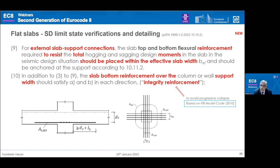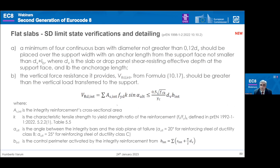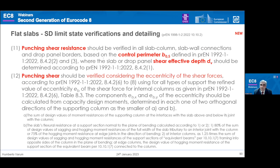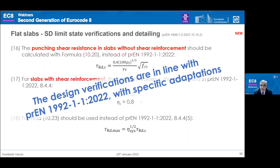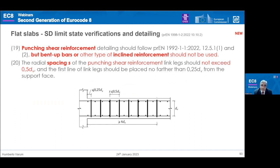An important concern to avoid progressive collapse is quantification of integrity reinforcement, based on the Model Code, with specific expressions and detailing rules for the designer. For punching shear resistance, the concepts from Eurocode 2 are kept in terms of control perimeter and effective shear depth, with the strategy of Eurocode 2 adapted for seismic design. Simple rules for minimum spacing of punching shear reinforcement are also advanced. Rules from Eurocode 2 are adopted, but inclined or bent-up bars are not recommended for earthquake design of flat slab systems.